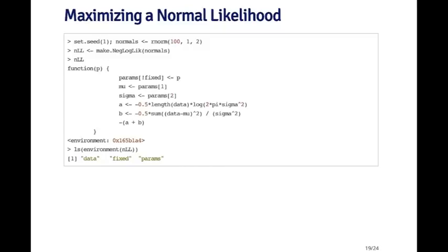The value 0x165b1a4 is a hexadecimal number which gives the address of where the defining environment is located in memory. If you look at the body of the NLL function, pretty much everything is either a local variable or it comes from the parameter vector p. However, there is one variable — the data variable — which is not an argument to the function and not a local variable, so it's a free variable. The data come from the make.negloglike constructor function, to which we originally passed the data. So the data can be looked up in the environment where the function was defined — it knows what the data are; you don't have to tell it, it's already fixed in the function.